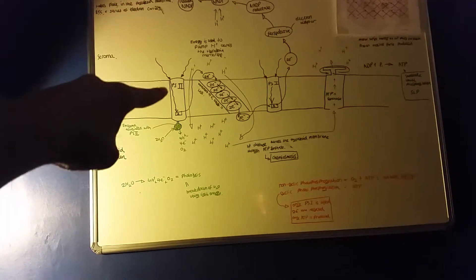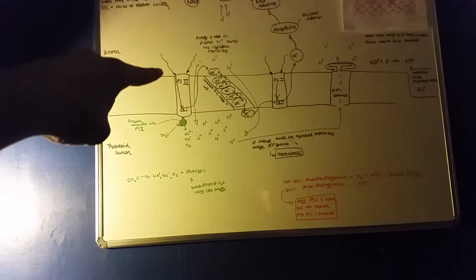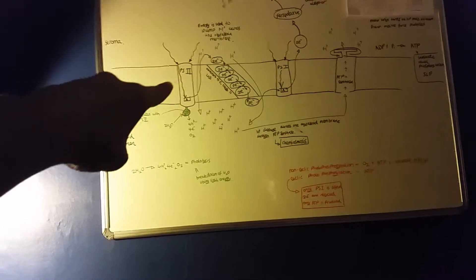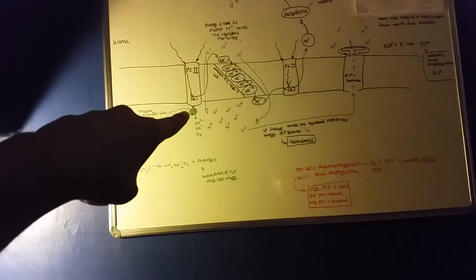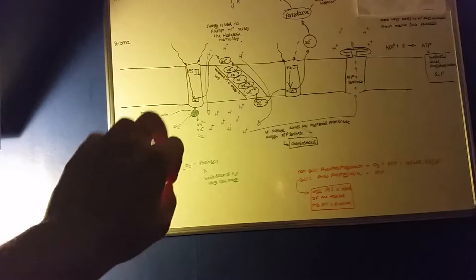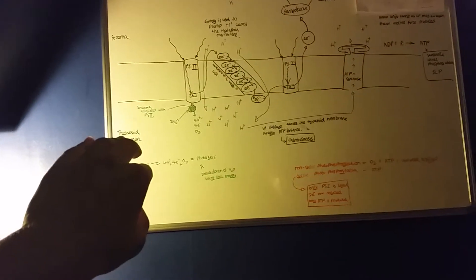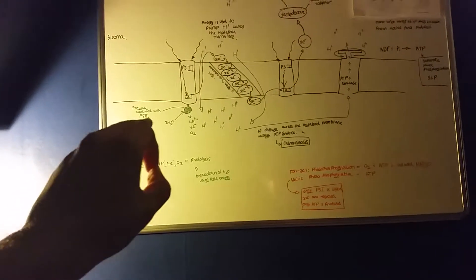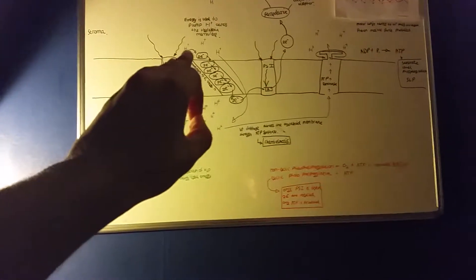When light strikes photosystem II, the energy associated with light travels down the photosystem and reaches the primary pigment reaction center, or chlorophyll A. From there, two electrons become excited from the magnesium atom in the porphyrin ring and they are accepted by an electron acceptor.